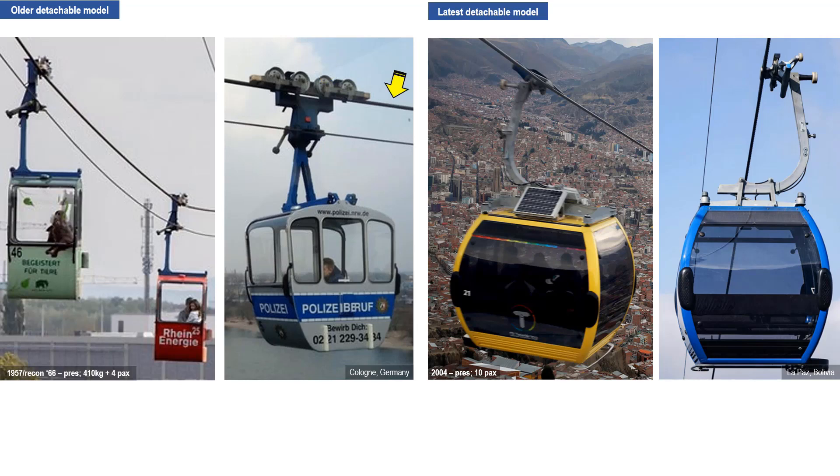Whereas in the latest improved version, the support and haul cable of the old model has been combined into one cable. The carriage wheel and detachable grip of the old model is also combined into one. It is amazing that the assembly has become much smaller. And yet, the cabin capacity has been increased from 4 to 10 passengers. Furthermore, with continuing improvements, it has become safer and more efficient.